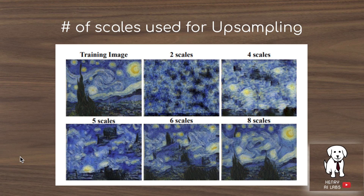SYNGAN uses a multi-scale architecture starting from a predefined scale. Starting with a 256x256 image, you can scale it down to 4x4 or 8x8, and also control the upsampling ratio at each step — for example, going from 4x4 to 8x8 to 16x16, or jumping from 4x4 to 16x16 to 64x64. Using more scales — up to 8 in this example — produces much more coherent images compared to using only 2 scales.